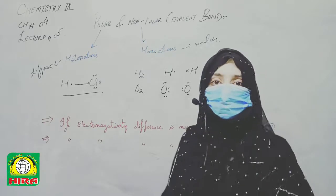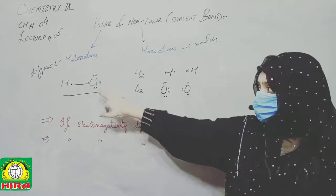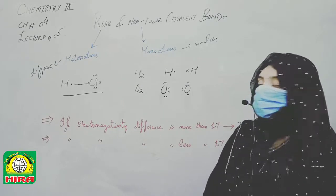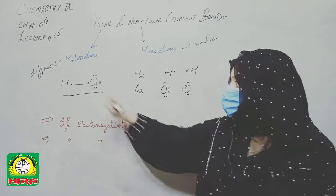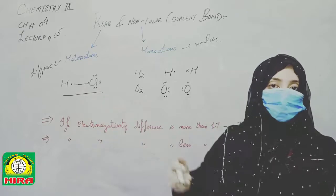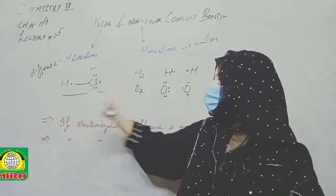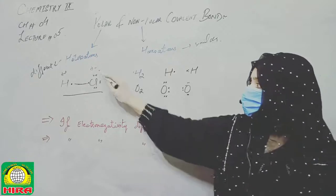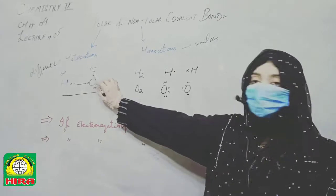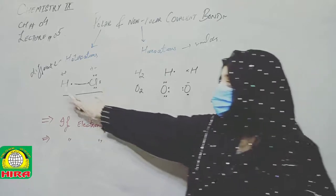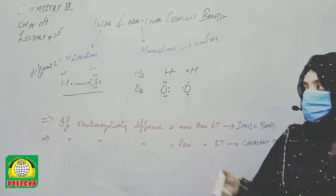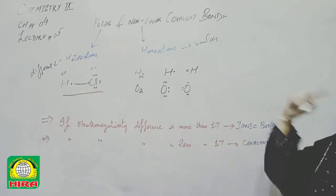One important concept is electronegativity — the ability of an atom to attract the shared pair of electrons. In HCl, chlorine attracts the shared electrons more strongly, giving it a partial negative charge (δ−) and leaving hydrogen with a partial positive charge (δ+). Chlorine is more electronegative in nature, so it attracts electrons more.